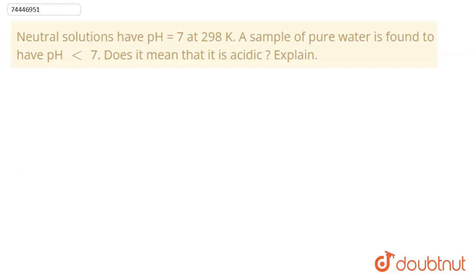Hello friends, welcome to Doubtnut. Let's start the question. The question is saying, neutral solutions have pH equal to 7 at 298 Kelvin. A sample of pure water is found to have pH less than 7. Does it mean that it is acidic?